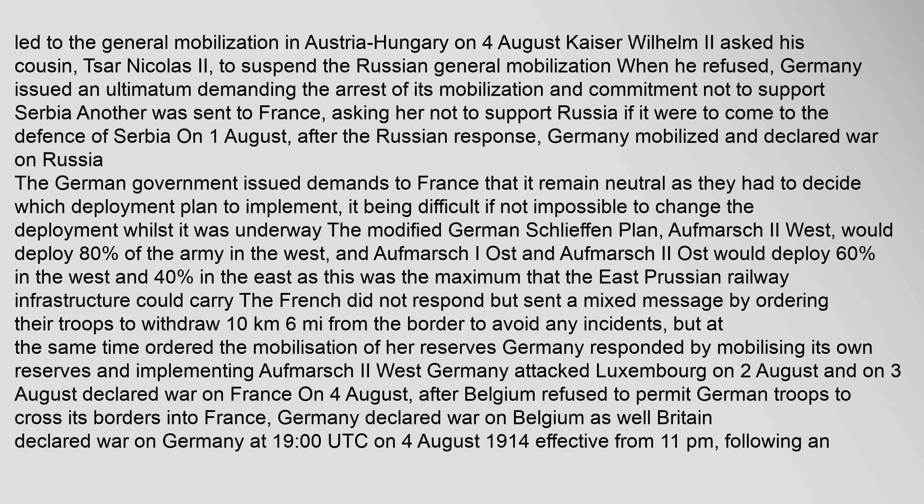Kaiser Wilhelm II asked his cousin Tsar Nicholas II to suspend the Russian general mobilization. When he refused, Germany issued an ultimatum demanding the arrest of its mobilization and commitment not to support Serbia. Another ultimatum was sent to France, asking her not to support Russia if it were to come to the defense of Serbia. On 1 August, after the Russian response, Germany mobilized and declared war on Russia. The modified German Schlieffen Plan — Offmarsch II West — would deploy 80% of the army in the west, while Offmarsch I-Ost and Offmarsch II-Ost would deploy 60% in the west and 40% in the east, the maximum that the East Prussian railway infrastructure could carry. The French sent a mixed message by ordering their troops to withdraw 10 kilometers, and Germany gave an unsatisfactory reply to the British ultimatum that Belgium must be kept neutral.